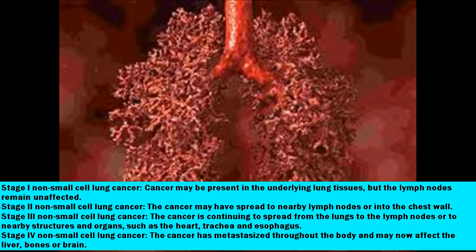Stage 3: the cancer is continuing to spread from the lungs to the lymph nodes or to nearby structures and organs, such as the heart, trachea, and esophagus. Stage 4: the cancer has metastasized throughout the body and may now affect the liver, bones, or brain.